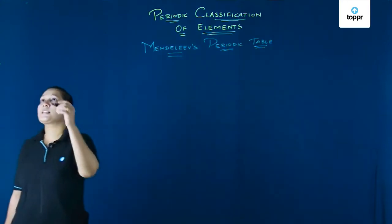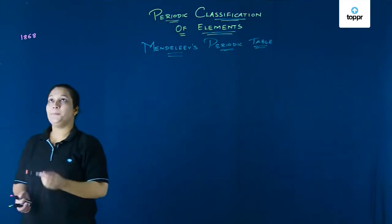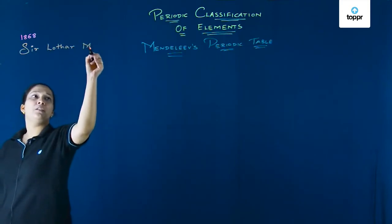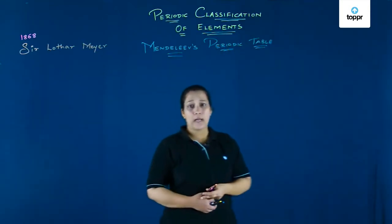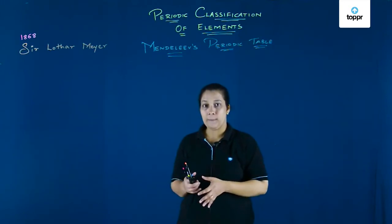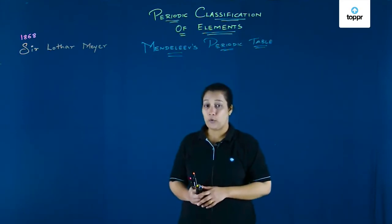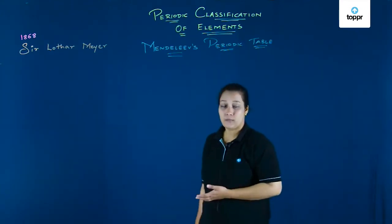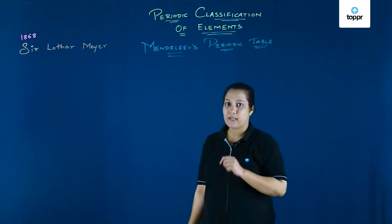It was in the year 1868. There was Sir Lothar Meyer, and he was definitely taking the help of the discarded theories of Sir Newlands and Sir Döbereiner to find out the way by which he would be able to frame up an arrangement — a particular order by which we could find all the elements gathered under one roof. The contribution given by Lothar Meyer is a major one for the arrangement we see today.